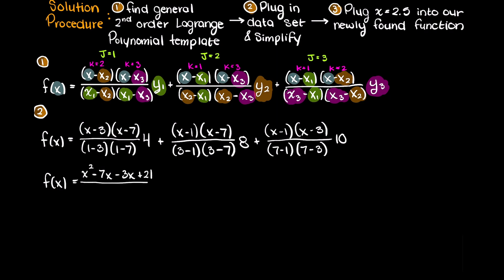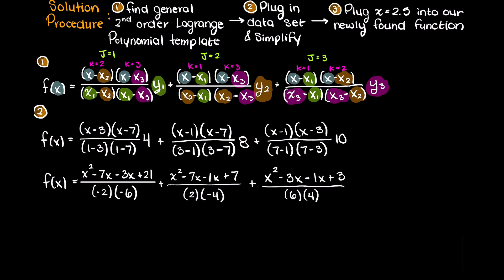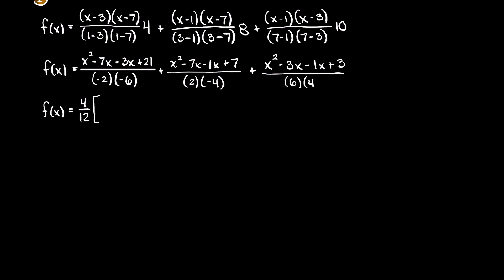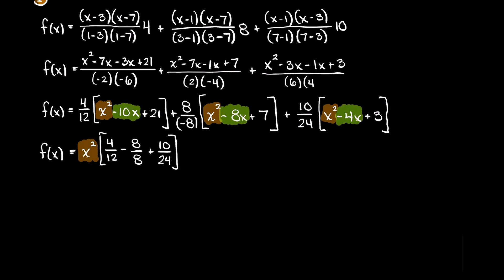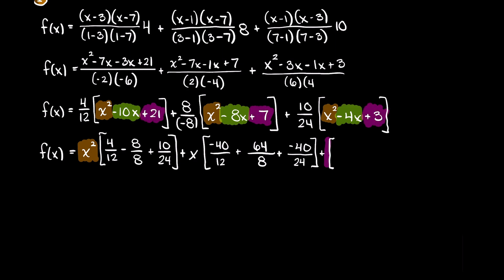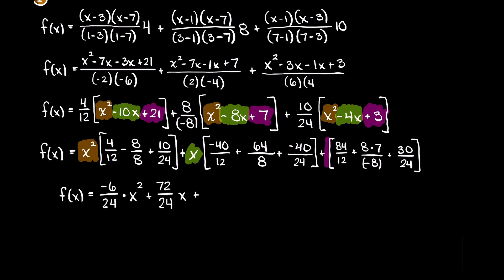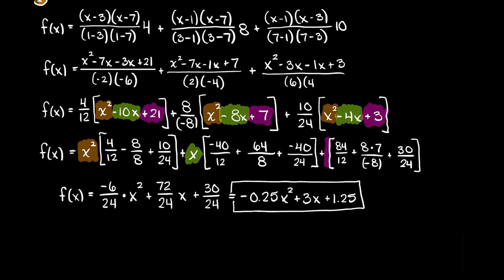I am first going to solve for each individual term presented here. To further simplify, I am going to group our x terms and our constant terms. Now I am going to simplify the coefficient terms. As these are rational fractions, I am going to convert them to decimals, and this is our interpolated Lagrange function.